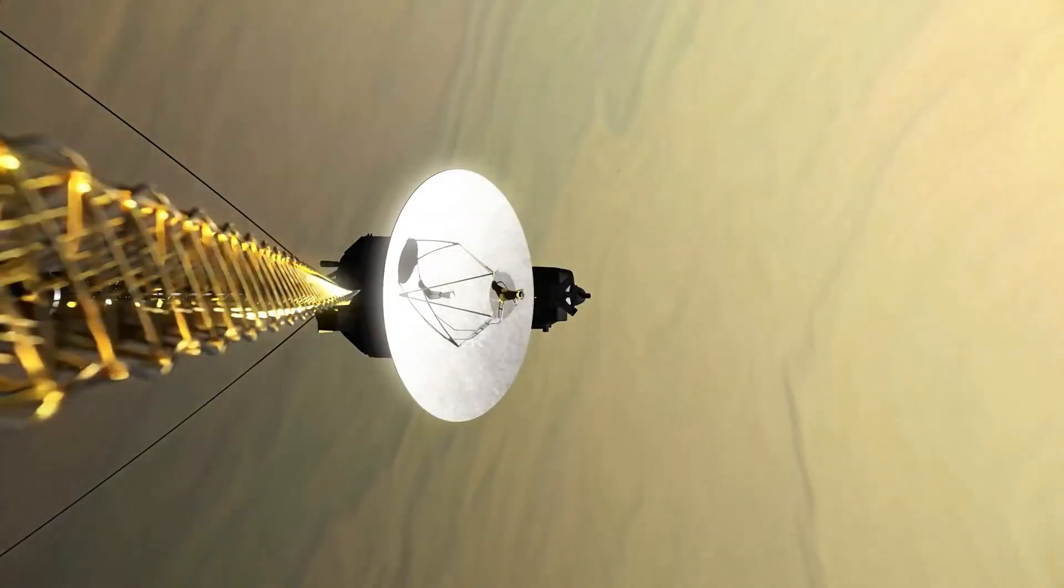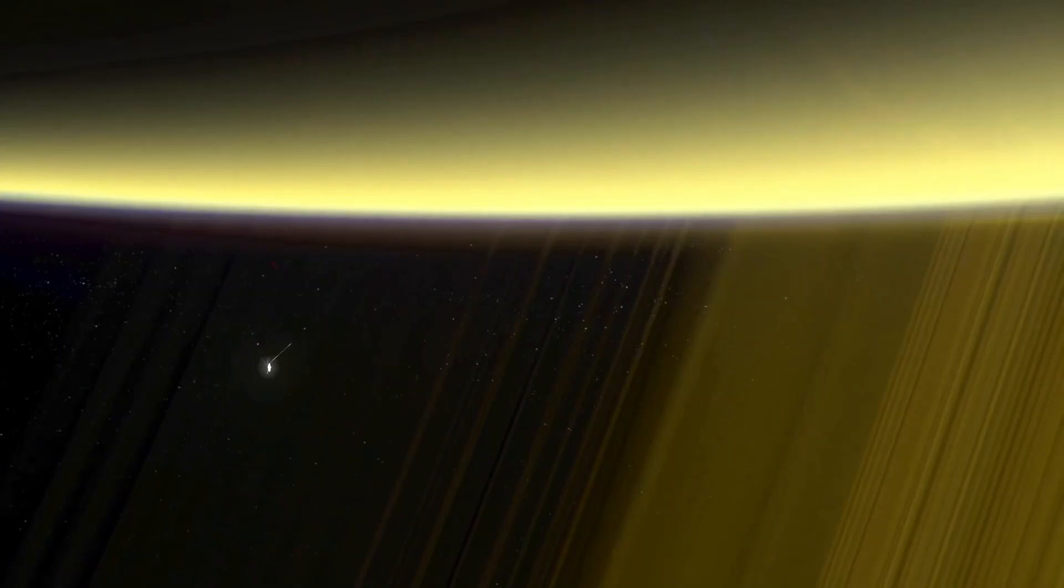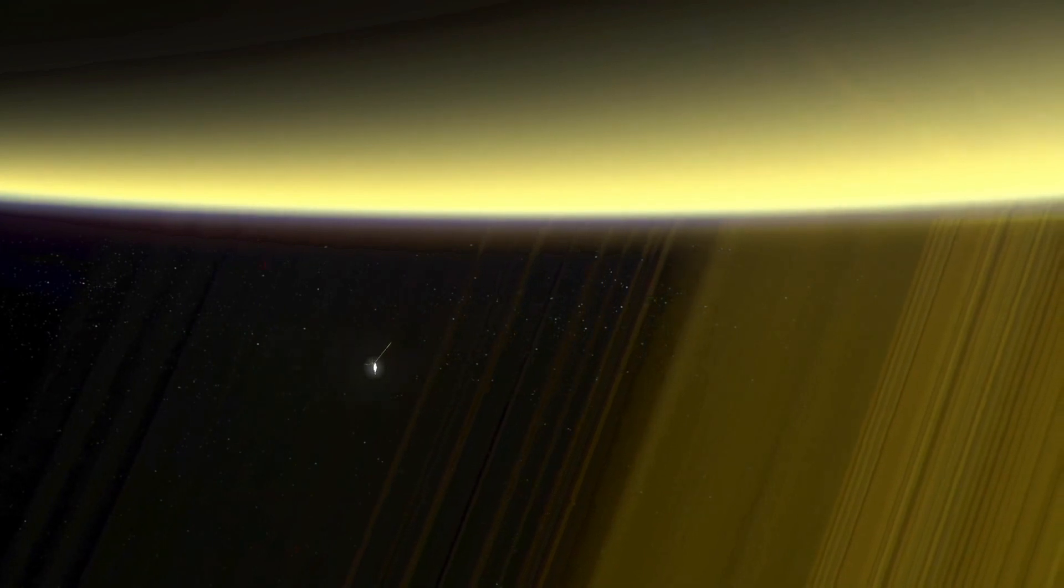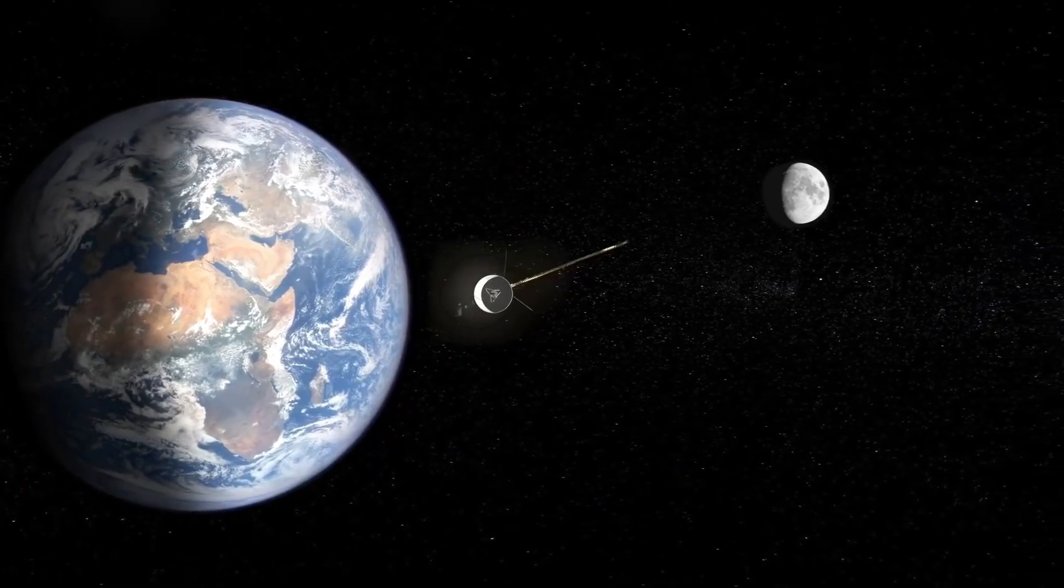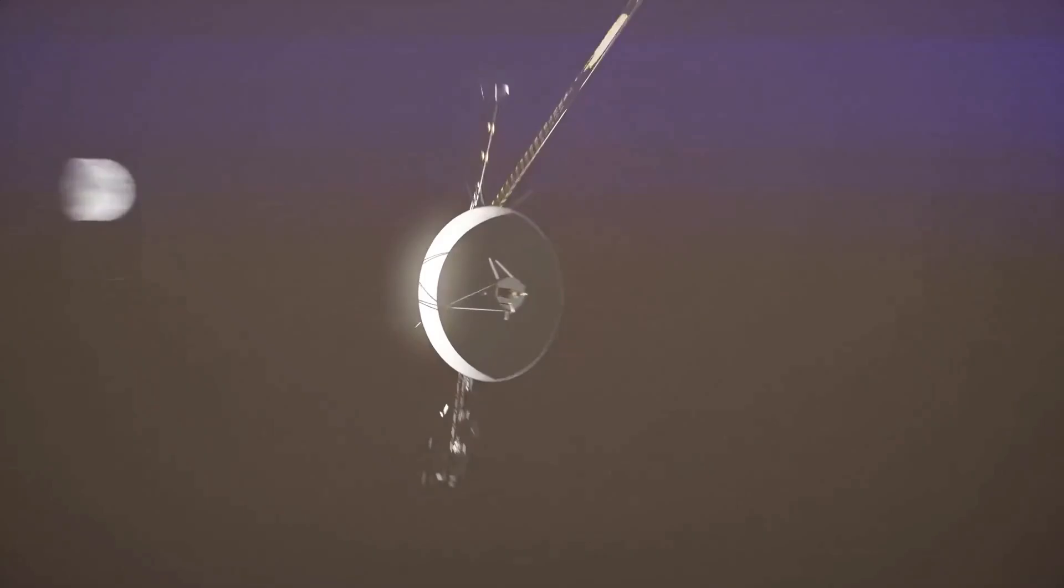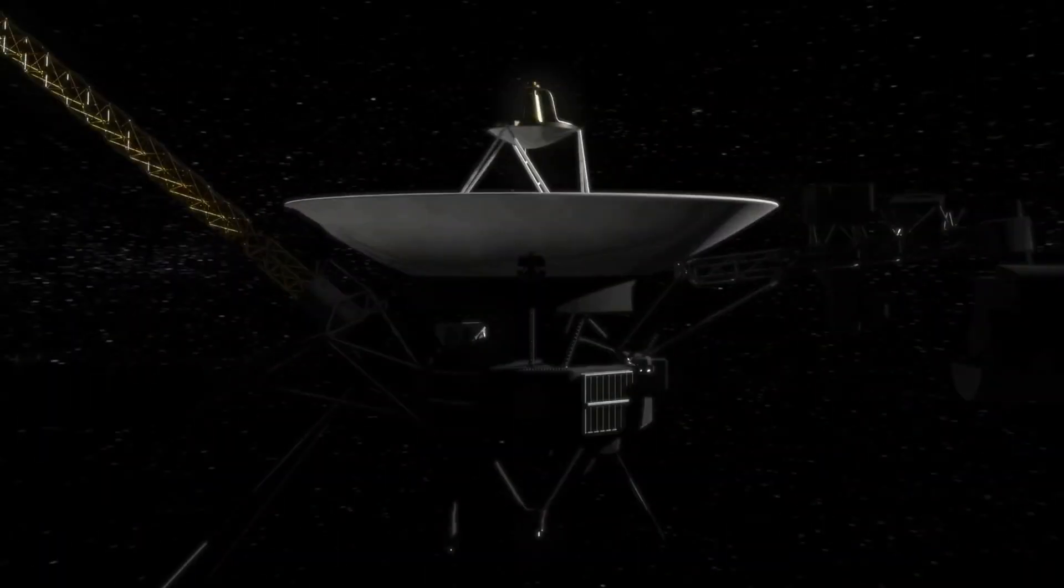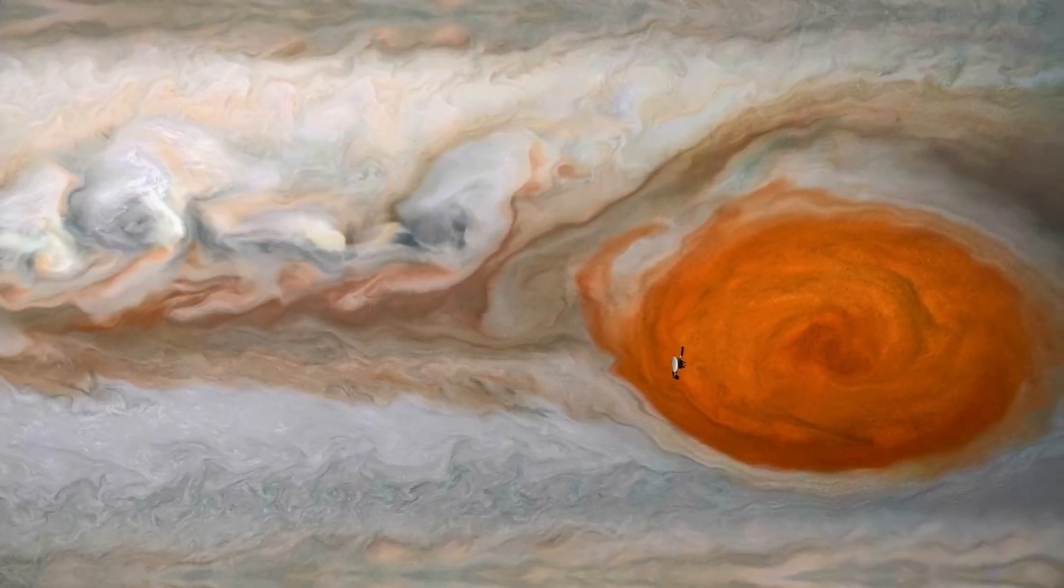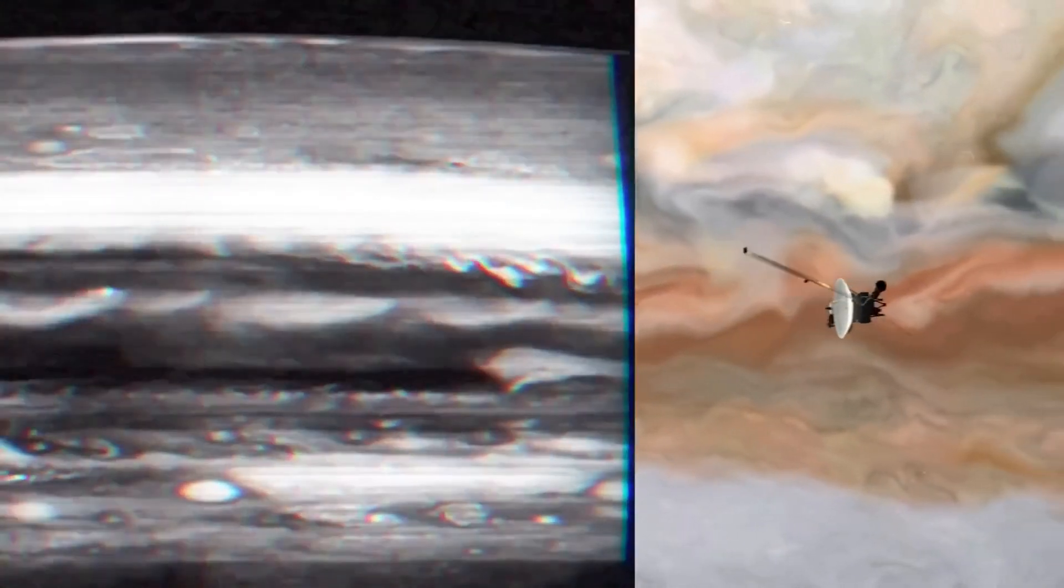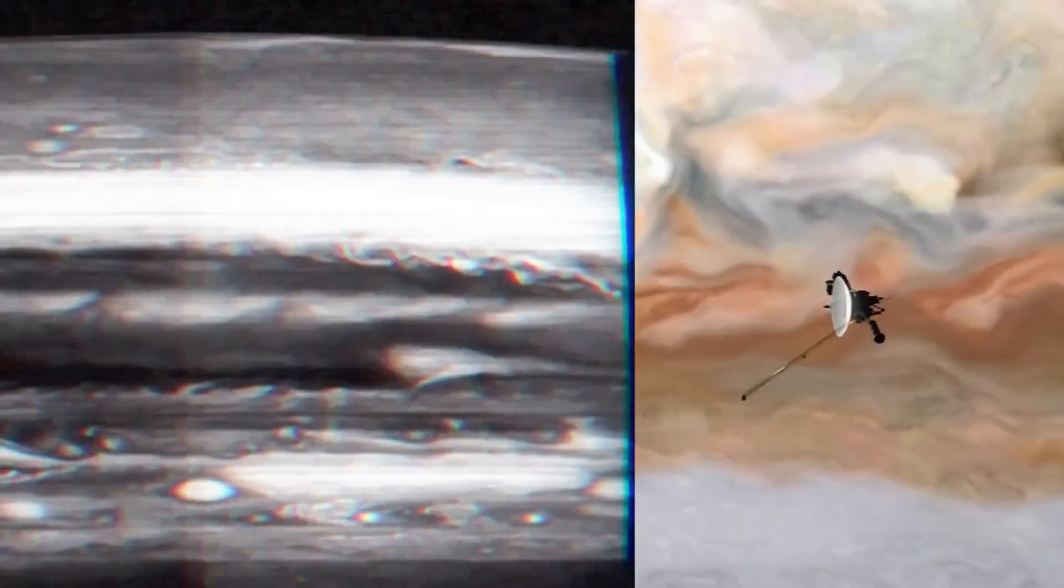Until the nature of the issue is better understood, the team cannot anticipate whether this might affect how long the spacecraft can collect and transmit science data. Voyager 1 is currently 14.5 billion miles from Earth, and it takes light 20 hours and 33 minutes to travel that distance. That means it takes roughly two days to send a message to Voyager 1 and get a response, a delay the mission team is well accustomed to.